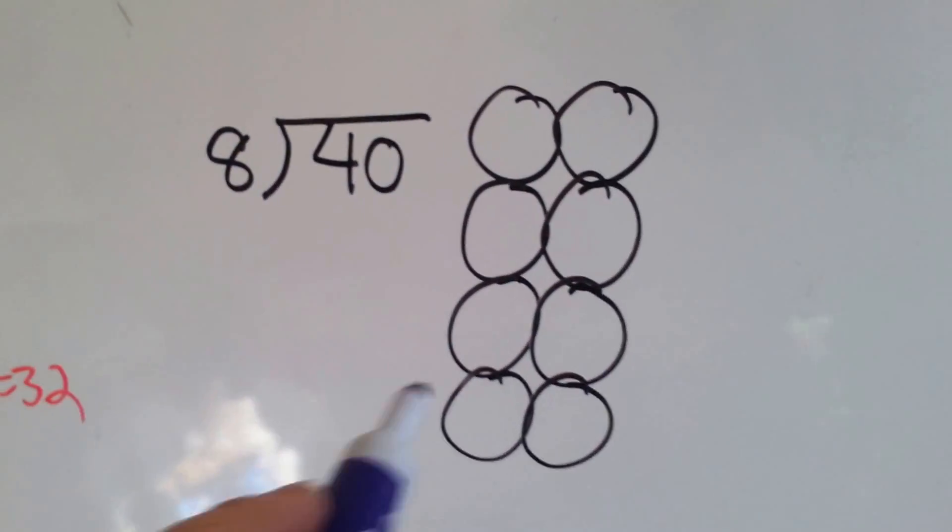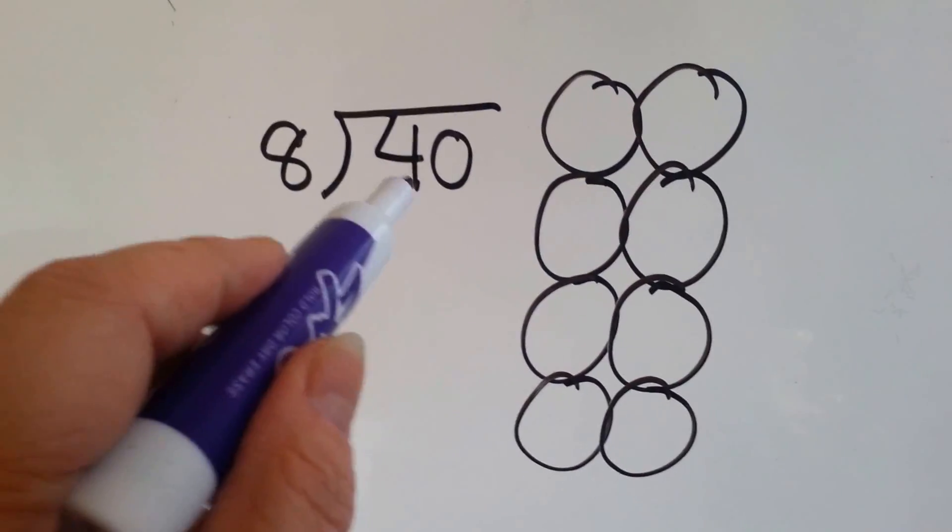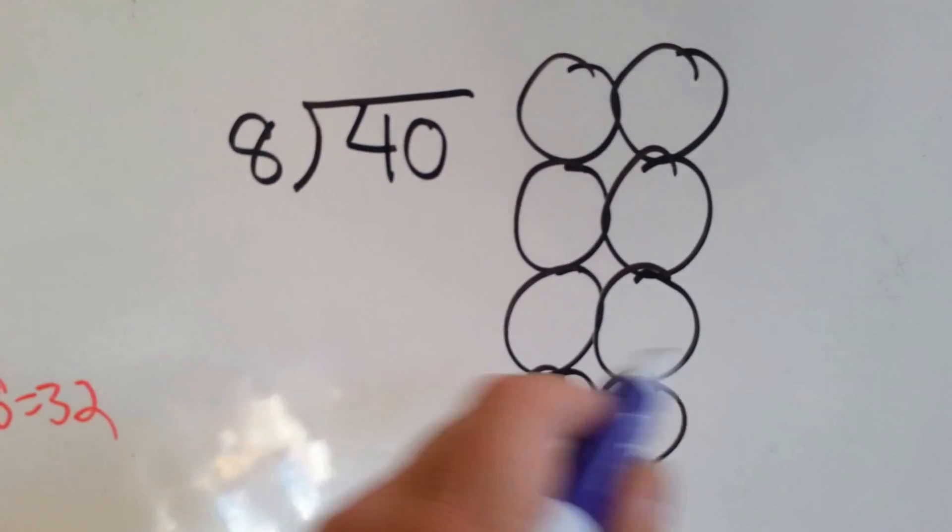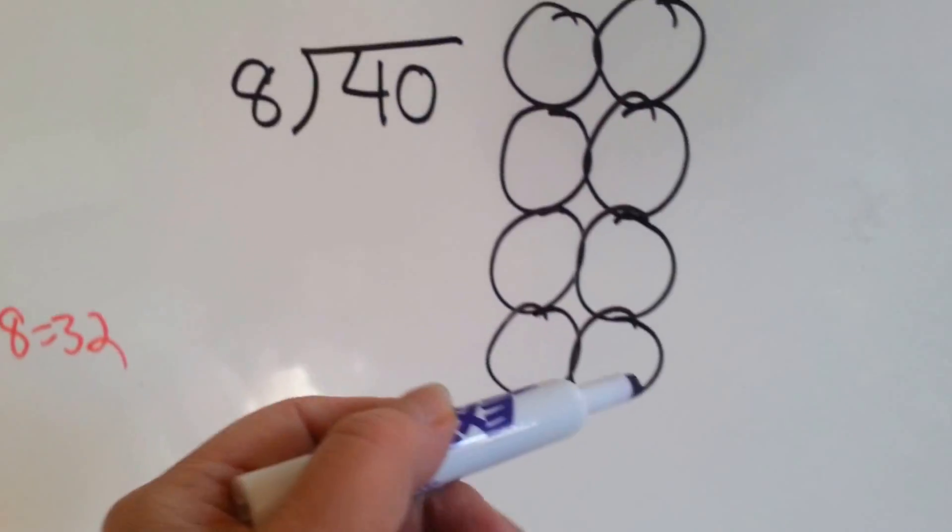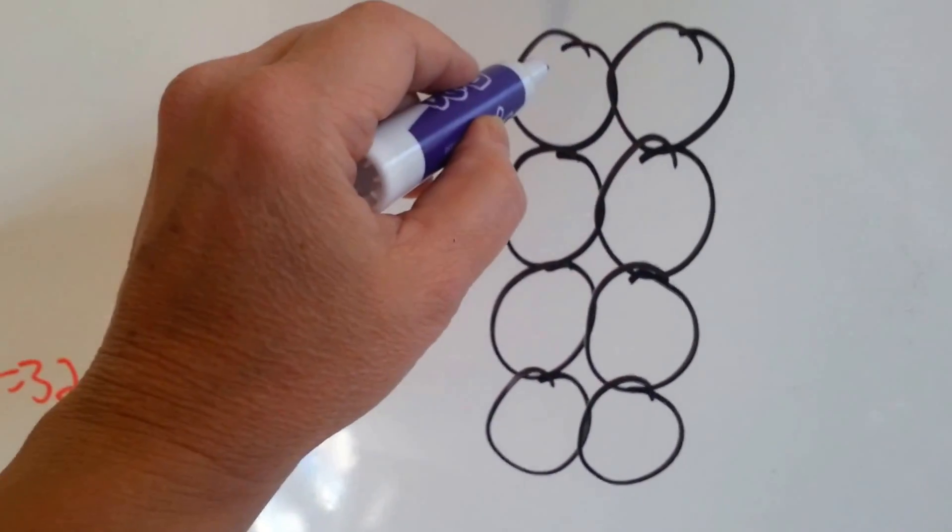Now we're going to do the group method. 8 goes into 40, how many times? I wrote my 8 groups and now we're going to put a dot in each group, taking turns, until we've counted to 40. Each group gets a turn.